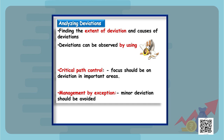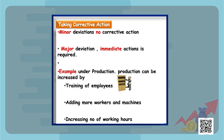The next step is analyzing deviation. We find the extent of deviation and the causes of these deviations. Deviations can be observed using critical path control and management by exception, which focus on important areas. Management by exception says minor deviations should be ignored and only major deviations should be focused upon. Then we take corrective action — minor deviations are ignored and steps are taken to correct major deviations. For example, in the production department, production can be increased by training employees, adding more workers, and increasing working hours.